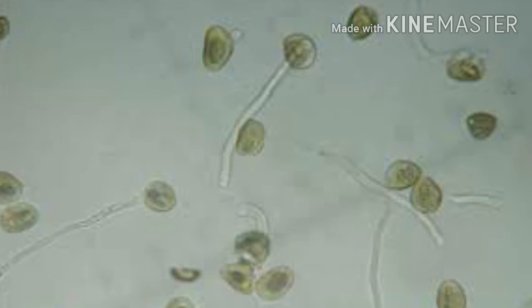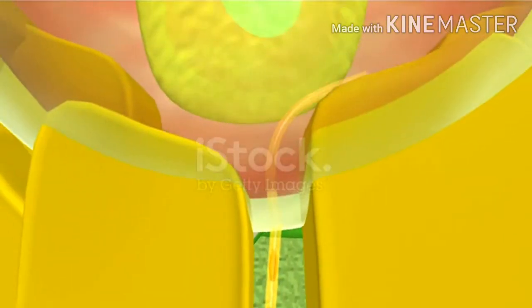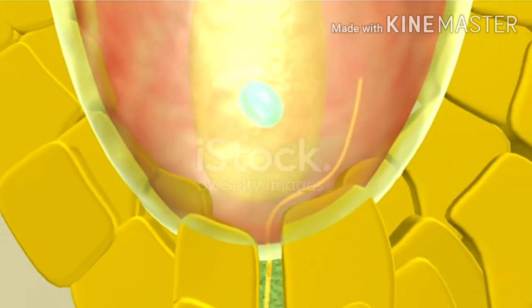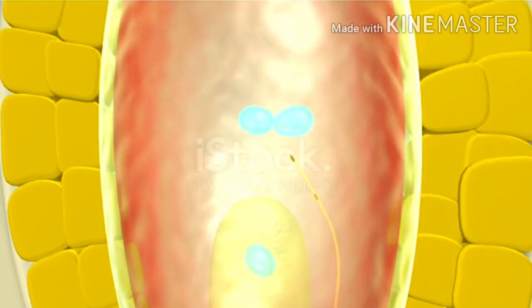The pollen tube emerges from the germ pore. The haploid generative cell divides to form two male gametes. The pollen tube enters the embryo sac through the micropyle. It enters through the degenerating synergid.